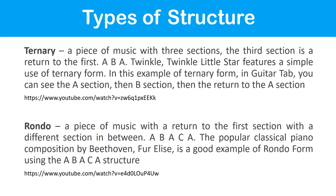Rondo is a piece of music with a return to the first section with a different section in between: ABACA, and it could keep going to ADAEA and so on, depending on the composer. Beethoven's Für Elise is a good example of Rondo form using the ABACA structure. It's important to know that sections don't have to be the same length every time. Also, many classical composers named pieces after their structure — for example, Rondo alla Turca, the Turkish March, is also in Rondo form.